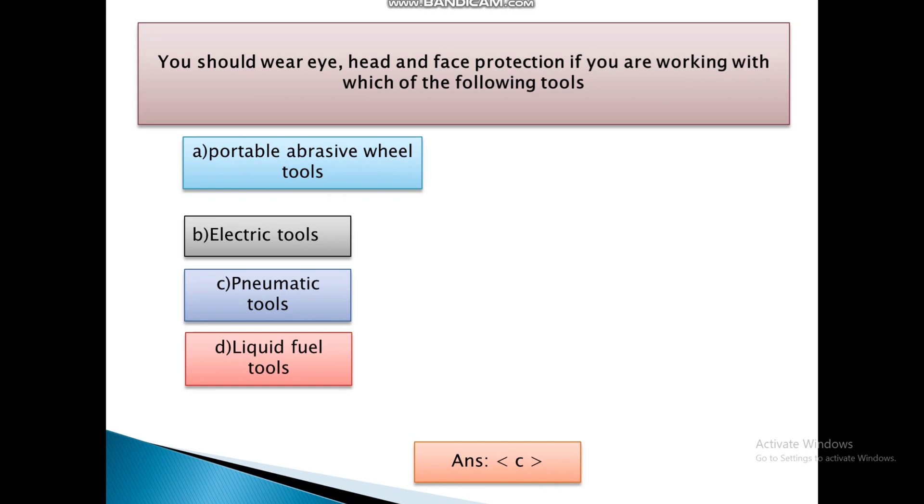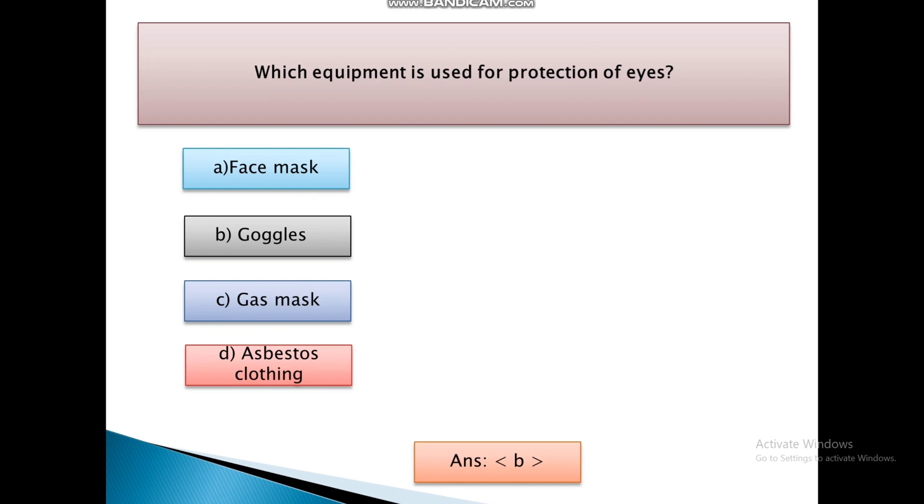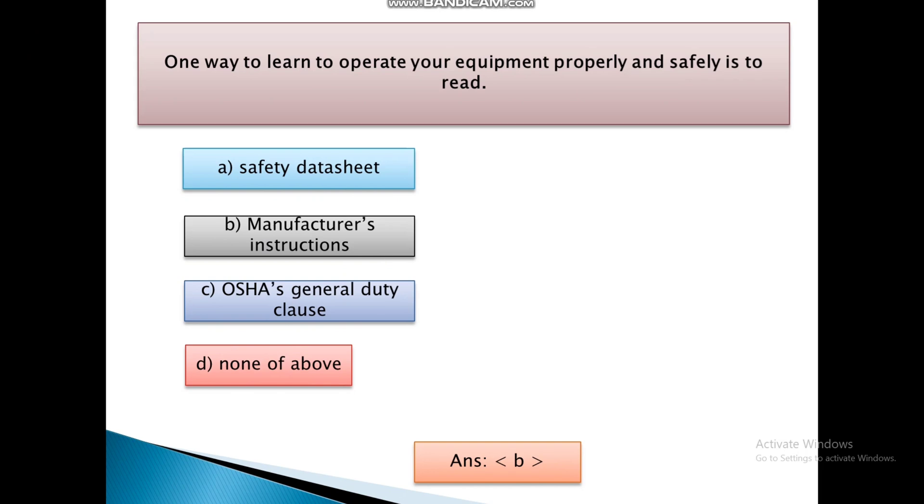You should wear eye, head, and face protection if you are working with which of the following tools. First is portable abrasive wheel tools. Second, Electric tools. Third, Pneumatic tools. And Fourth, Liquid fuel tools. Answer is C, that is pneumatic tools. Which equipment is used for protection of eyes? First, Face mask. Second, Goggles. Third, Gas mask. And Fourth, Asbestos clothing. And the answer is B, that is goggles are used for protection of eyes.